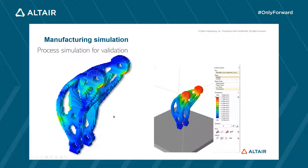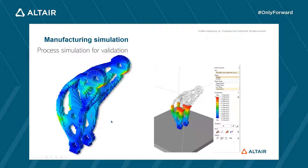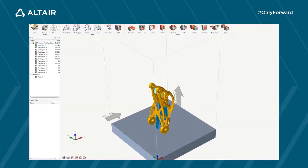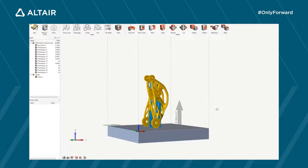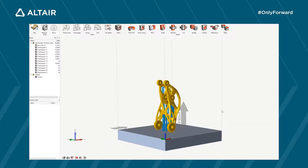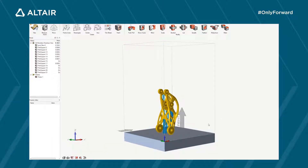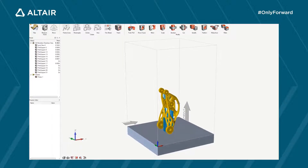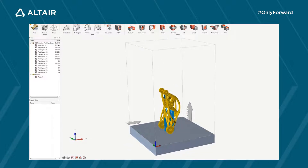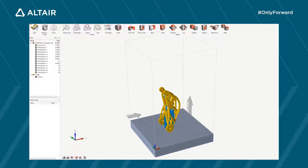Let me go to Altair Inspire and show you how to set up the manufacturing simulation. What you will see here is the imported geometry — the optimized geometry from the CAD system. It has been loaded into Inspire and now the setup of the 3D printing process is done.